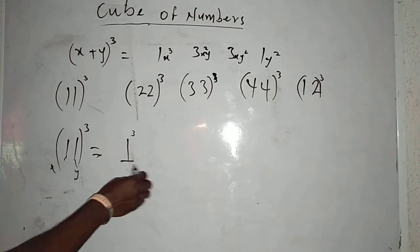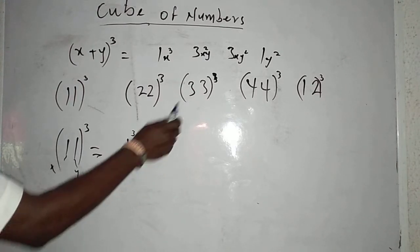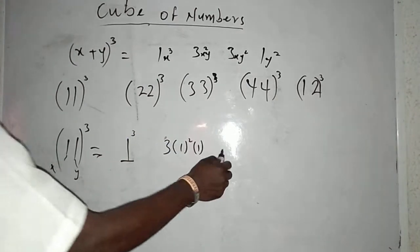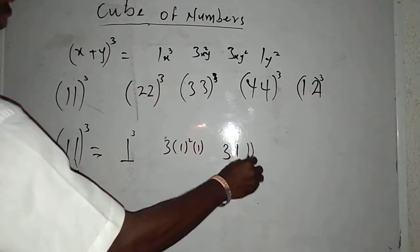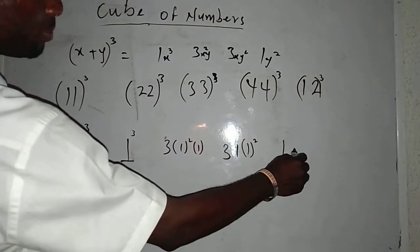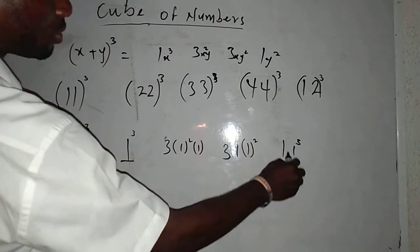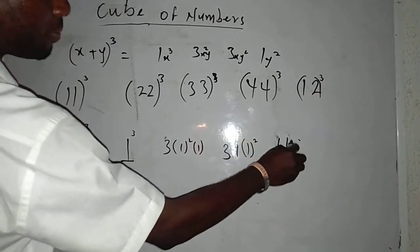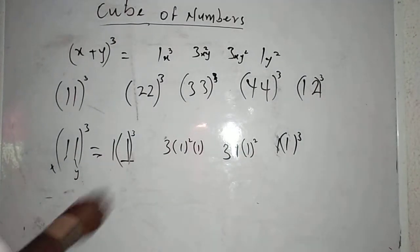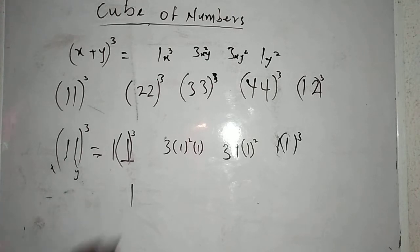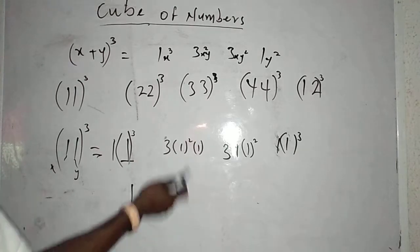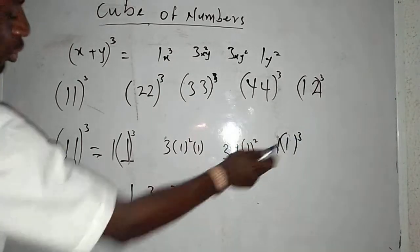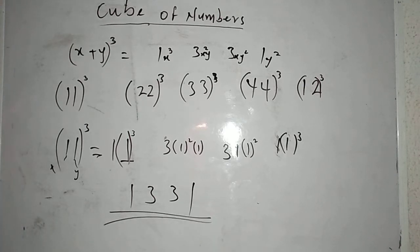The first stand will be 1 raised to power 3. The second stand will be 3 bracket of 1 squared bracket of 1. The third stand will be 3 bracket of 1 bracket of 1 squared. The last stand will be 1 bracket of 1 raised to power 3. Now: 1 times 1 times 1 is 1; times 3 gives 3; the next also gives 3; and the last is 1. So my final answer is 1, 3, 3, 1 — that is 1331.